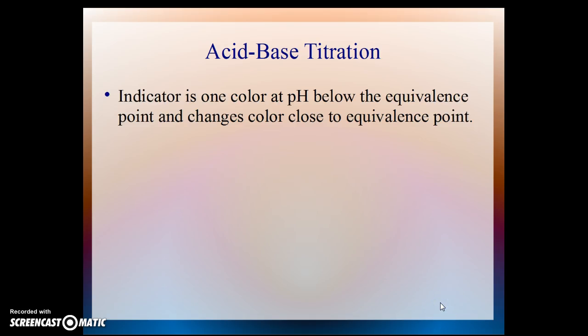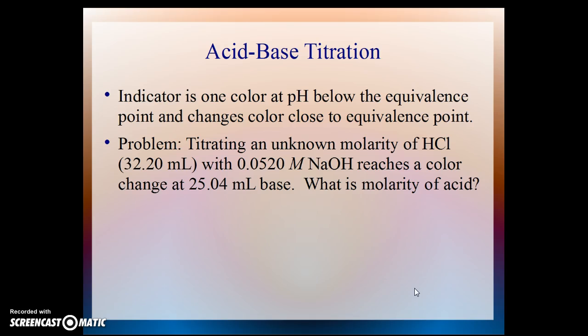The acid-base titration. The indicator that is used in an acid-base titration has one color at a pH below the equivalence point, and close to the equivalence point, that color changes. So let's look at a problem. Titrating an unknown molarity of hydrochloric acid, 32.20 milliliters, with 0.0520 molar sodium hydroxide, reaches a color change at 25.04 milliliters of base. What is the molarity of the acid? You may turn off this playback and solve the problem and then check your answer.